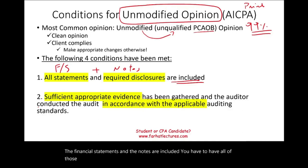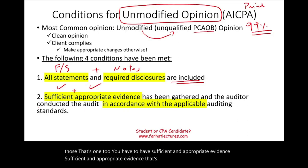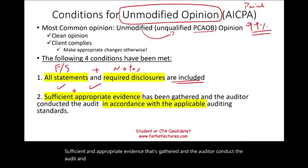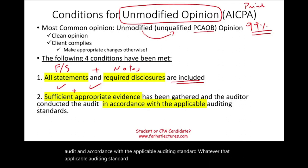The second condition is that you have to have sufficient and appropriate evidence. That evidence is gathered and the auditor conducts the audit in accordance with the applicable auditing standard, whether that's U.S. GAAS or the international auditing standards.